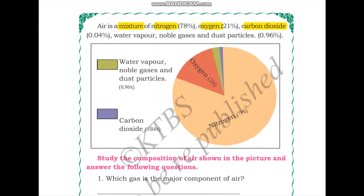The carbon dioxide component of air is much lesser than oxygen at only 0.04%. The other components include water vapor, noble gases and dust particles, making up 0.96% of air. Looking at the chart, nitrogen is the biggest component shown in cream color. Next we have oxygen at 21%, then water vapor and noble gases at 0.96%, and finally carbon dioxide at 0.04%, shown as the smallest part in purple.